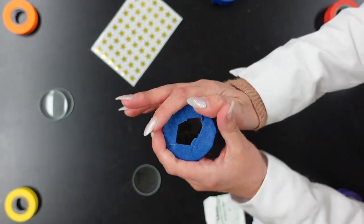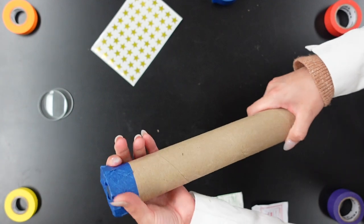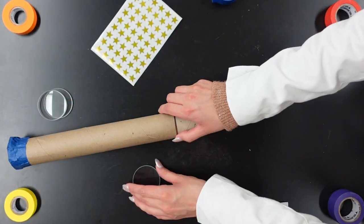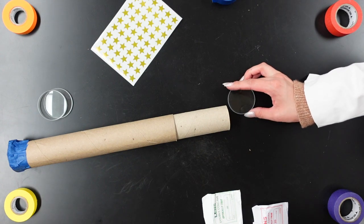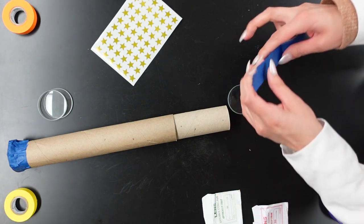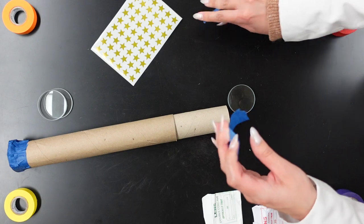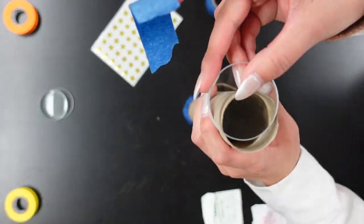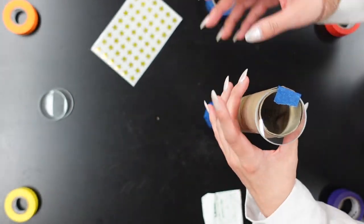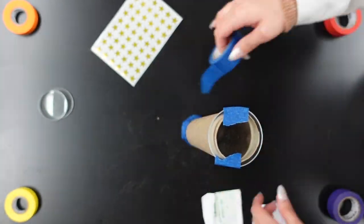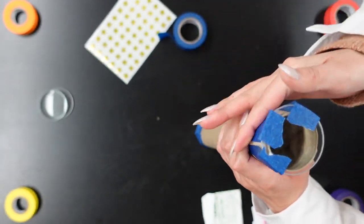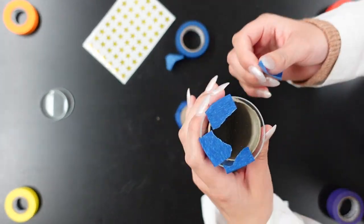That end is complete. Next we're going to go on the other end and we're going to do the same thing with our double convex lens. Again, make sure it's taped securely, but make sure that you're leaving space so you can look through.